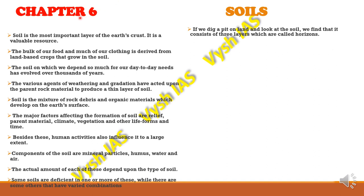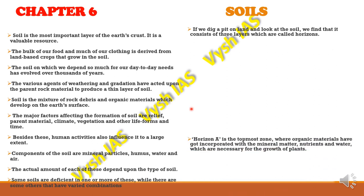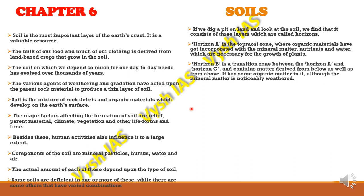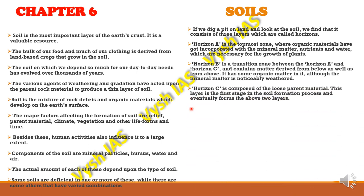When we dig a pit in the land and look at the soil, we can see different colors in the layers. Soil consists of three main layers called horizons. Horizon A is the topmost layer where organic materials are found along with mineral matter, nutrients, and water — all necessary for plant growth. Horizon B is a transition zone between horizon A and horizon C, containing matter derived from both below and above.